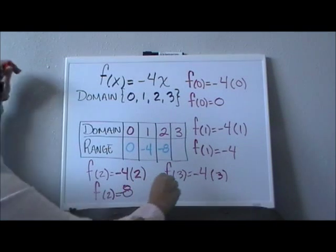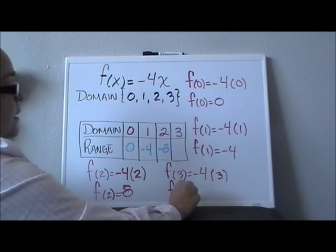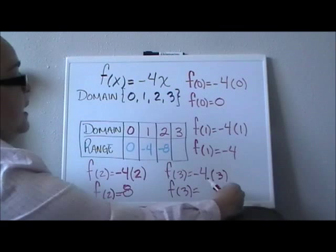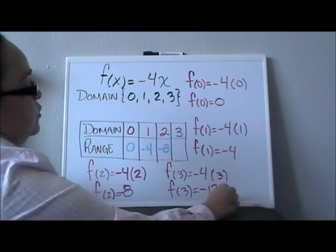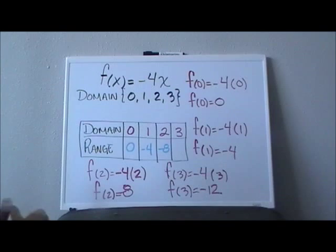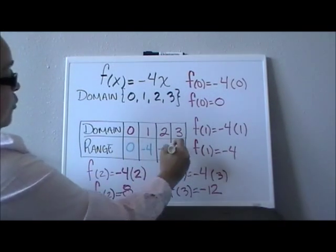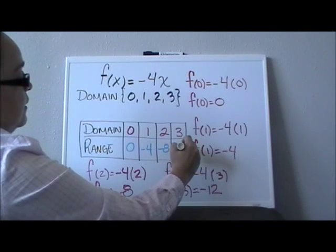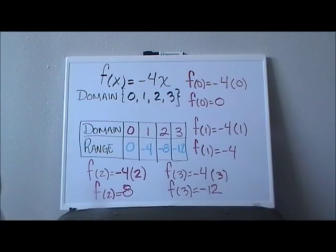So what would that be? f of 3 equals negative 4 times 3, negative 12. So for my x of 3, my y will be negative 12. And that's how you do it.